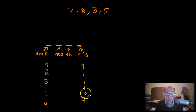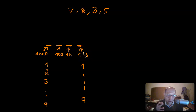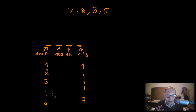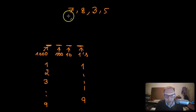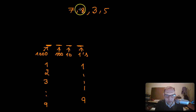In the ones place, whether I put a one or a nine doesn't make much difference - the difference is only eight. But the difference between one thousand and nine thousand is eight thousand. So I have to contribute the most to this place value because it's the weightiest place value in the number. Naturally, I have to pick the largest digit I have and place it in the thousands position.